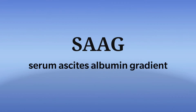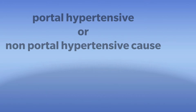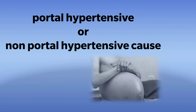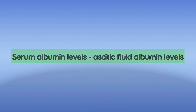Hi everyone. Today I am going to discuss SAAG, which means Serum Ascites Albumin Gradient. This is helpful in distinguishing the cause of ascites, whether it is a portal hypertensive or a non-portal hypertensive cause. We can obtain this value by subtracting ascitic fluid albumin levels from serum albumin levels, which are obtained at the same time.